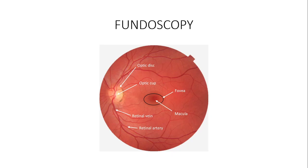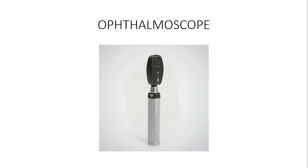Good morning students. Today we are going to learn about how to do fundoscopy — looking at the fundus of the eyeball, examining the vitreous and then the retina. We are going to go step by step. To do fundoscopy you need an ophthalmoscope, and this is what the ophthalmoscope looks like.